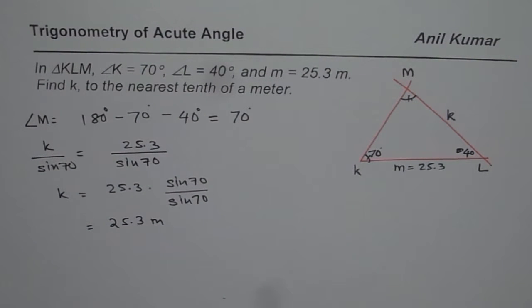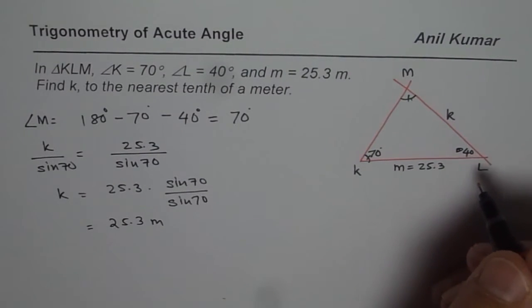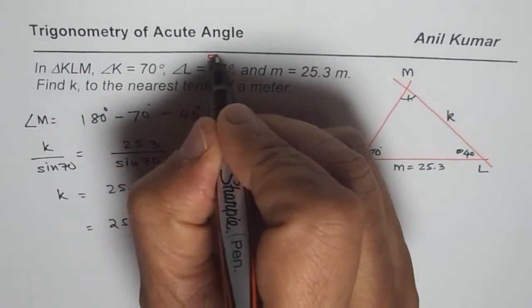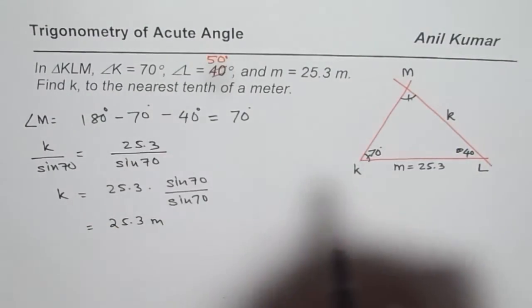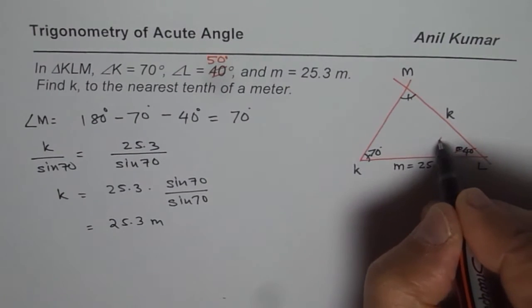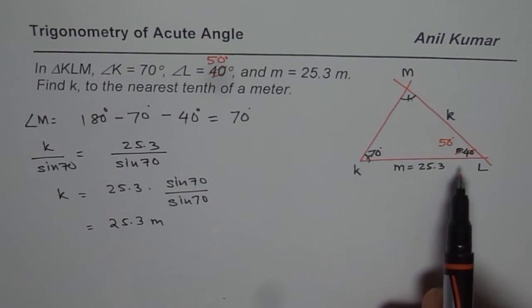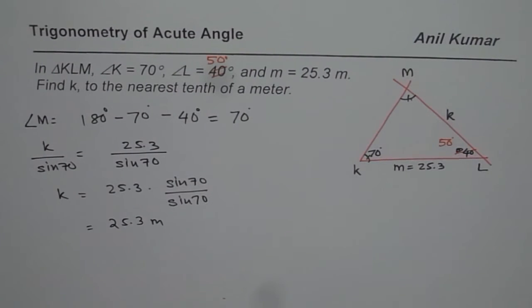Now let me change this question a bit. Let us change this angle from 40 to 50 degrees. I made a small change. And now that's the question for you to solve. Figure out what is K. You can apply the same method and solve the question. I hope that helps. Thank you and all the best.